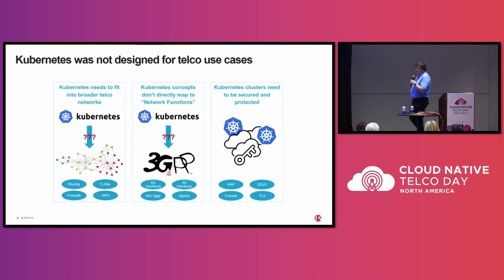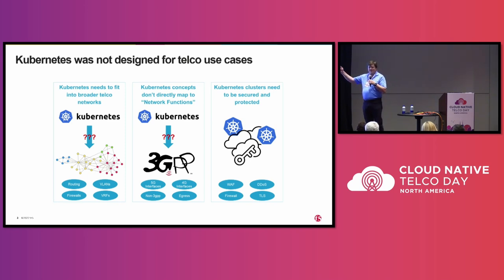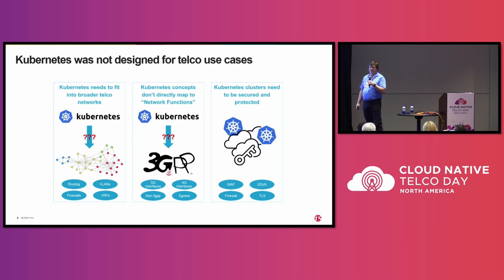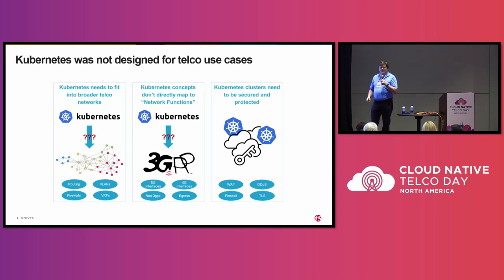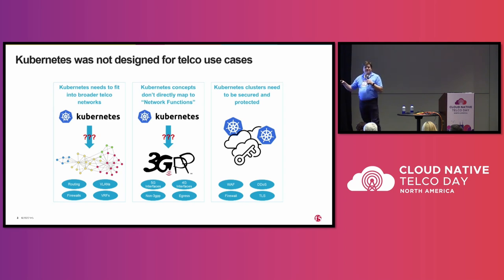The problem is that Kubernetes wasn't really designed for the telco use case. There are three big categories of reasons we've identified. The first and foremost is that the networking environment for telco is significantly more complex than Kubernetes really expects. In Kubernetes, usually there's a pod network and then everything else is just the internet. But that's not our world — you have your RAN network, your OAM network, your services network. It's significantly more complex, and we've intentionally kept those segregated. They have completely different infrastructure, different routing, firewalls, and everything else. Kubernetes just doesn't have a way to model that natively.